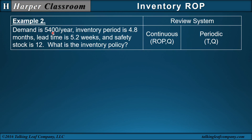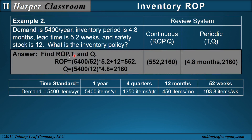Example 2: demand is 5,400 a year, inventory period 4.8 months, lead time 5.2 weeks, safety stock 12. For ROP, since lead time is in weeks, we convert demand to weekly by dividing by 52. Since the inventory period is in months, we convert demand to monthly by dividing by 12. Demand times lead time plus safety stock gives an ROP of 552. Demand times inventory period gives a lot size of 2,160. The periodic review system uses T = 4.8 months and lot size 2,160.